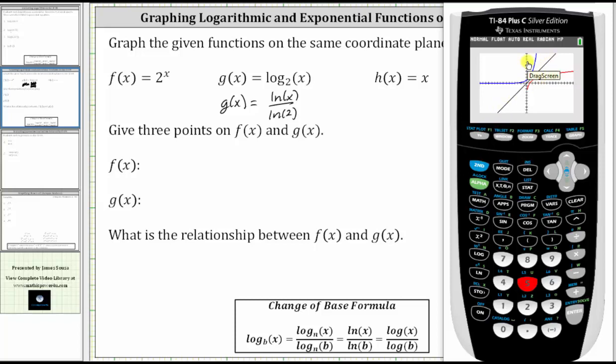Next, we're asked to give three points on f(x) and g(x). We will do this using the table of values. Before we go to the table, let's press 2nd WINDOW for the table set. Make sure we have the table start at zero, the change in the table by ones, and both the independent and dependent variables are on automatic. Now we press 2nd GRAPH to go to the table.